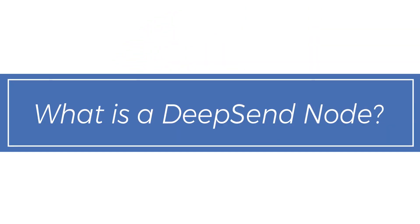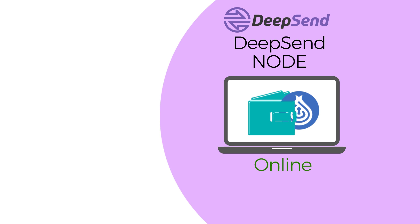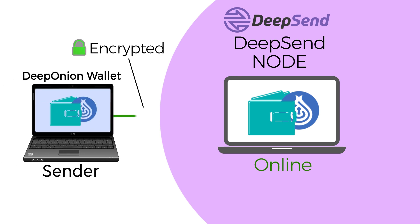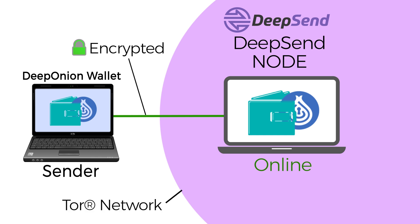What is a DeepSend node? DeepSend nodes are any online DeepOnion wallets that are activated to accept a DeepSend task. All DeepSend transactions are carried through Tor, protecting the IP address of the user, just like the rest of the features in the DeepOnion wallet. By using multi-signature, the process is automatic without the need for human intervention.